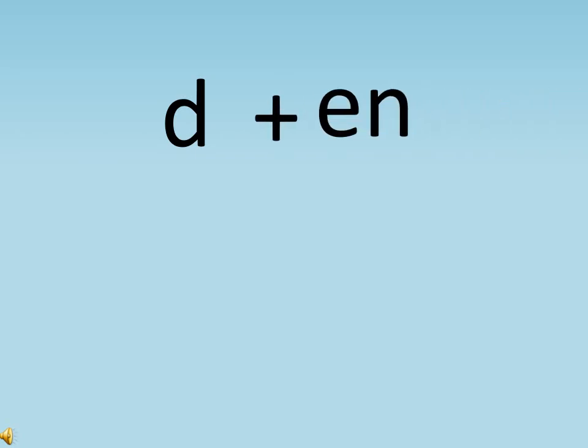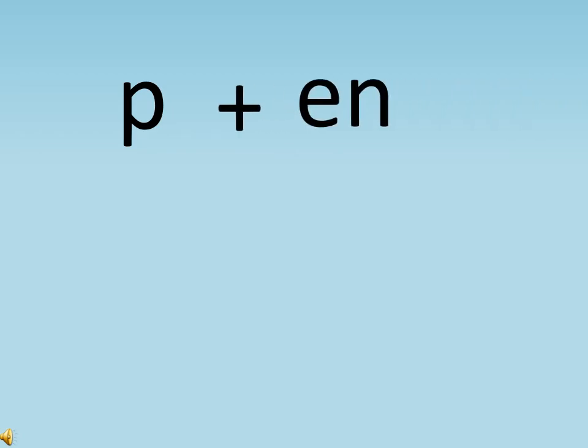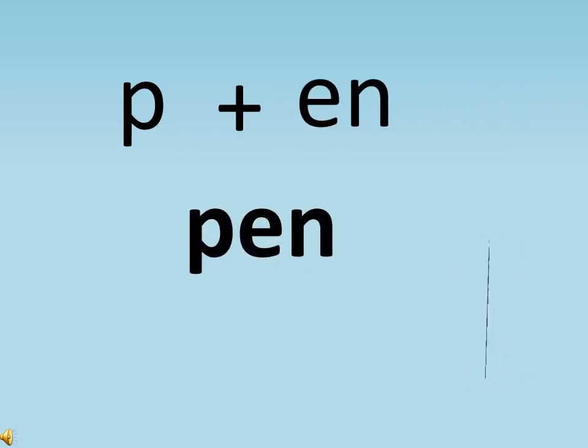Now come on, you try and read this. What is it? D says 'd', D plus EN says 'den'. D plus EN says 'den'. Very good! Now P plus EN says 'pen'.